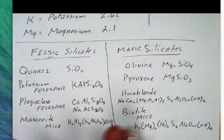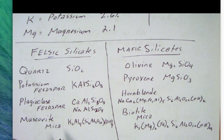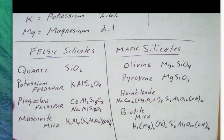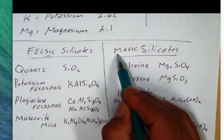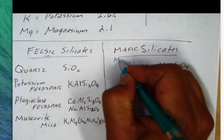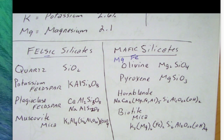Those are the light-colored or felsic minerals, because they have more silicon in them than they do magnesium and iron. In fact, you see very little to no magnesium and iron in these formulas. Now when we look at the mafic minerals, I want you to think of M for magnesium and F for iron — think of magnesium and iron. Those are the chemical symbols for magnesium and iron.